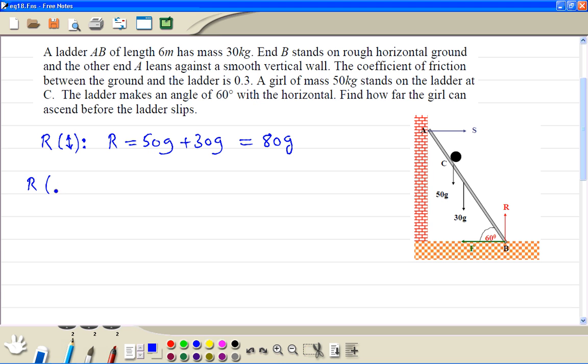Then we resolve it horizontally. So force acting to the left and to the right. So that's force F. Then F we know is equal to the coefficient of friction times R. So that's 0.3 times 80g, which equals 24g.